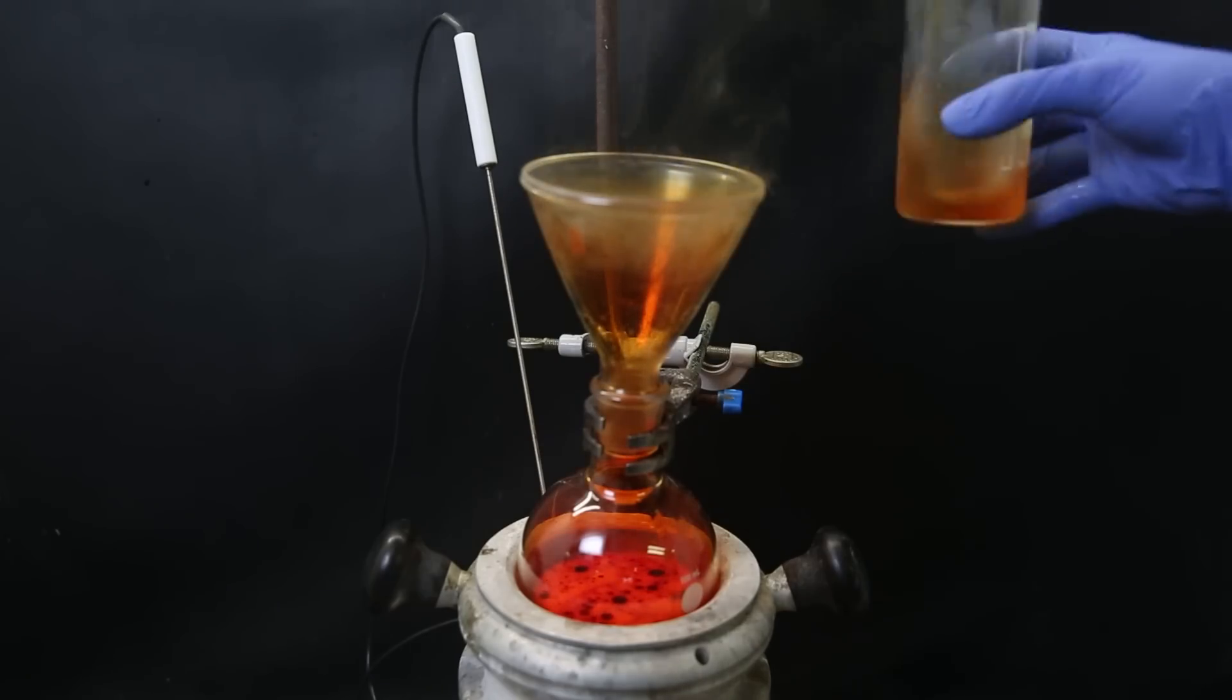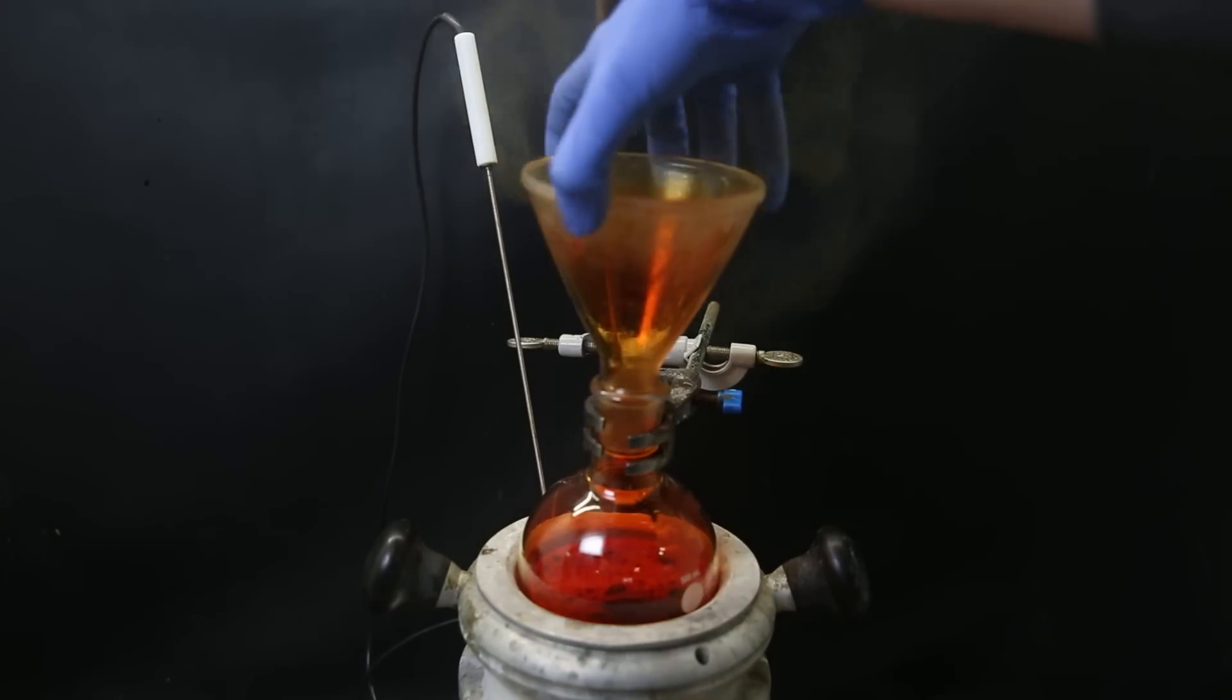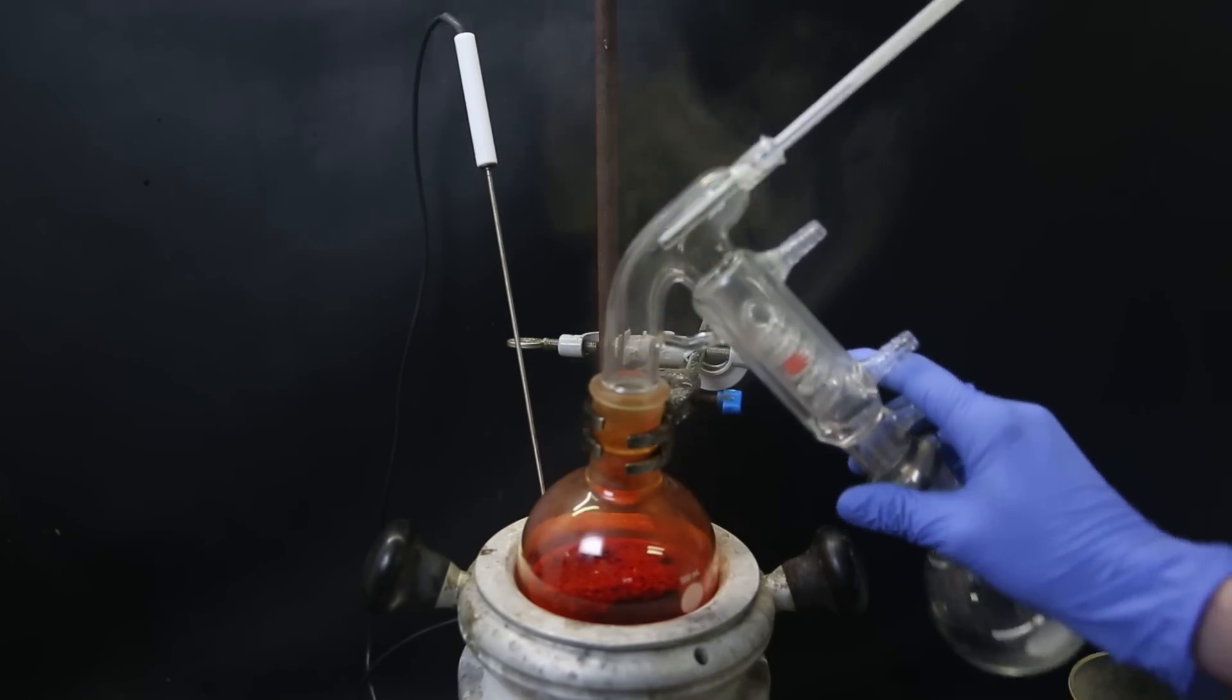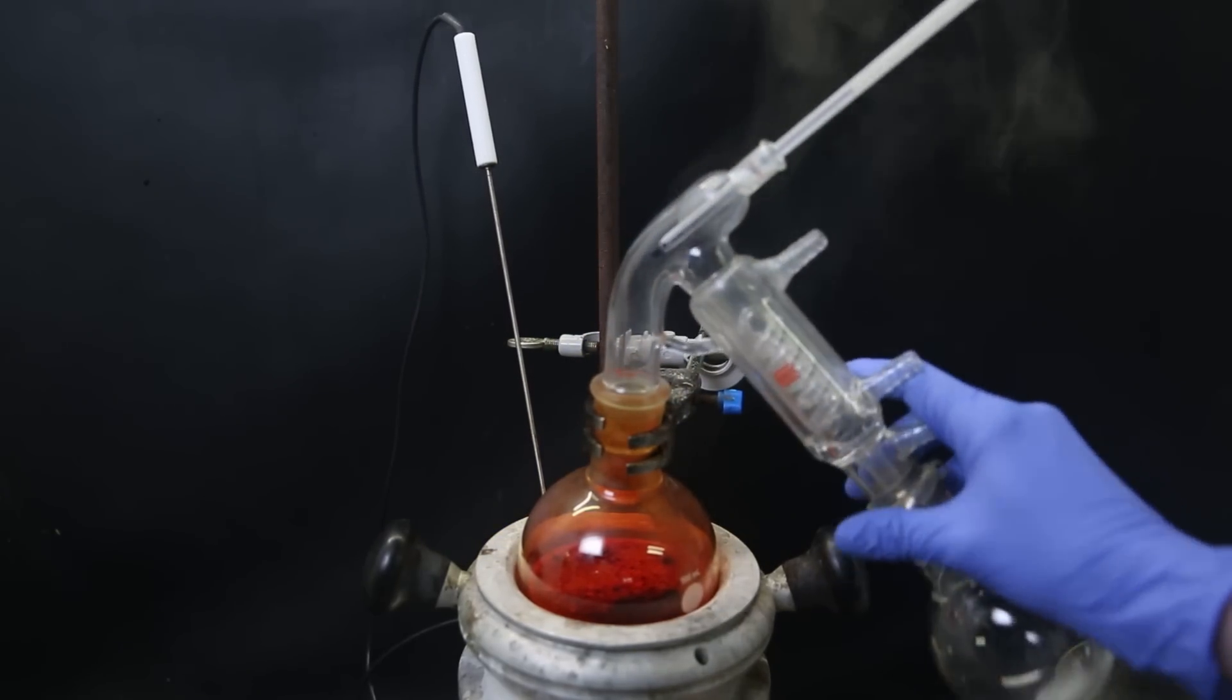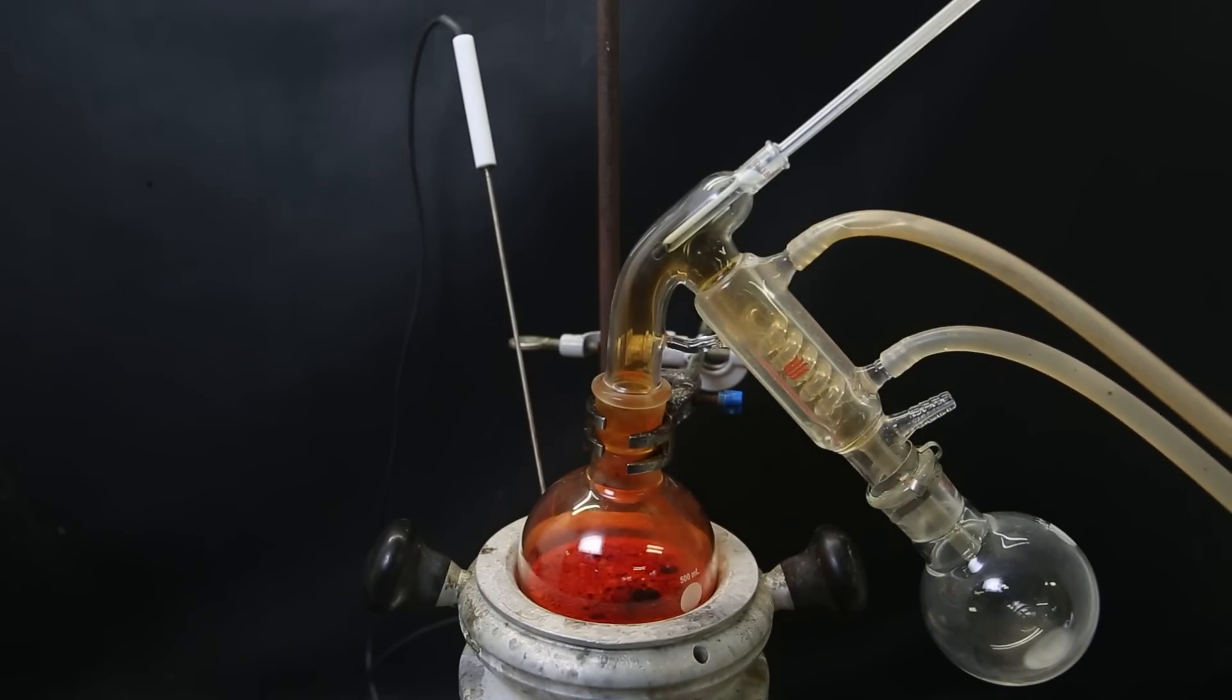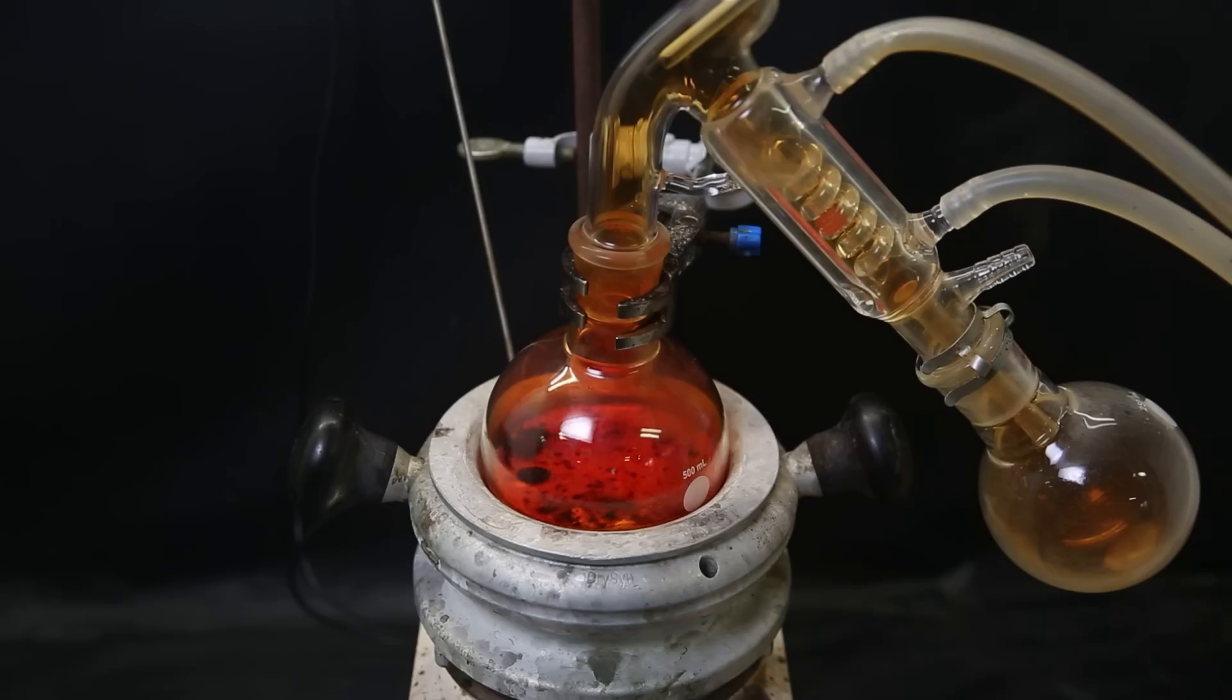I add more sulfuric acid, and then quickly attach a short path distillation apparatus. And then start heating it to a boil, to increase the reaction rate, and make the chromochloride distill over. After a short while, the stir bar starts to come loose, and it begins to mix normally.